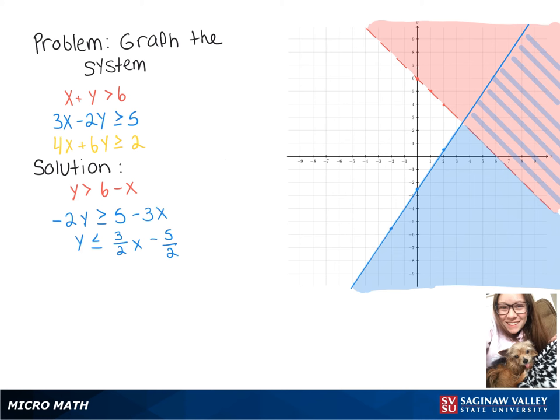Now moving on to our last inequality, we'll start by subtracting 4x over. So we've got 6y is greater than or equal to 2 minus 4x. Now when we divide by 6, we get y is greater than or equal to 1 third minus 2 thirds x.